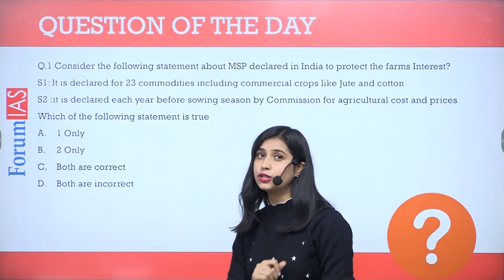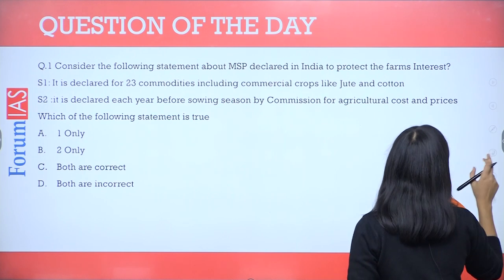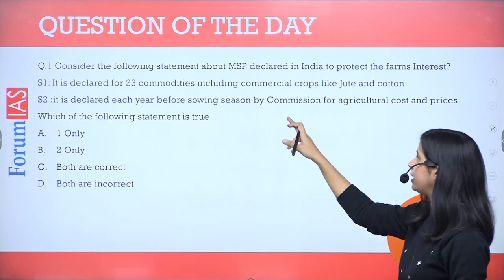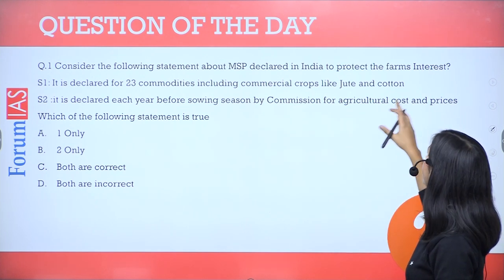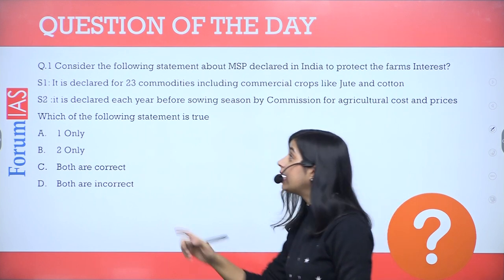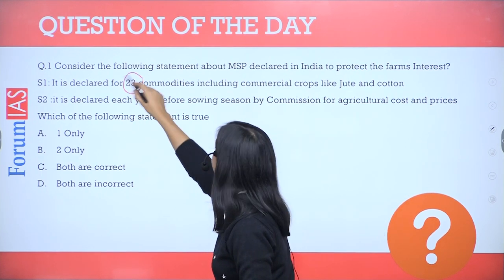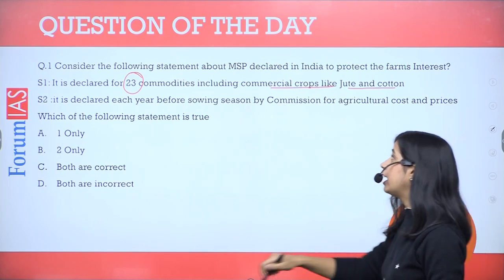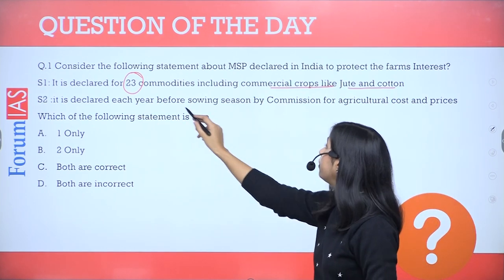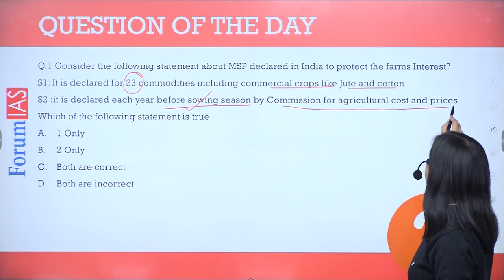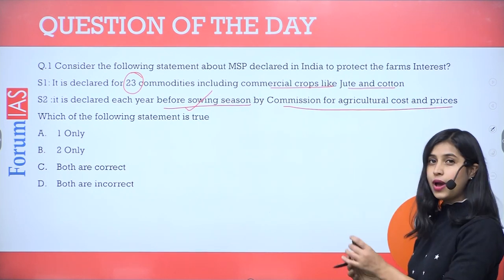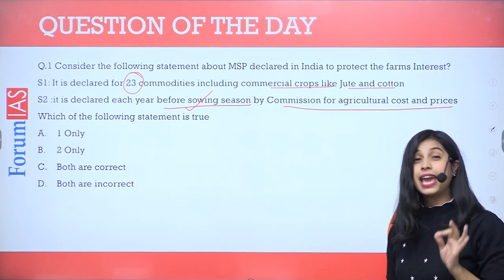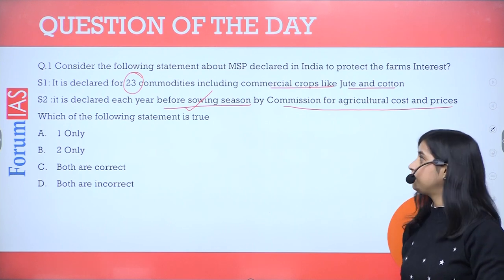But first, try to give the answer to the given question. The question is: consider the following statements about MSP declared in India to protect the farmers' interest. Statement one says that it is declared for 23 commodities that include commercial crops like jute and cotton. Statement two: it is declared each year before the sowing season by the Commission for Agriculture Cost and Prices. Read them carefully and then try to answer the given question.